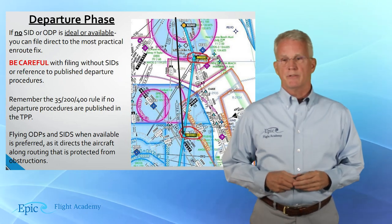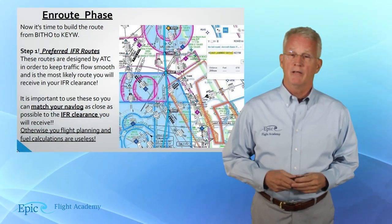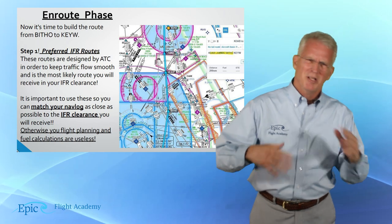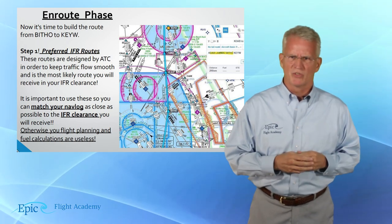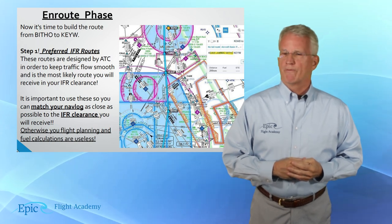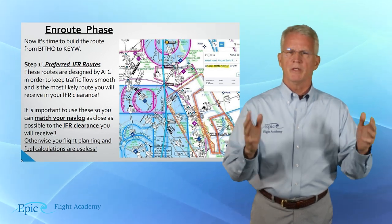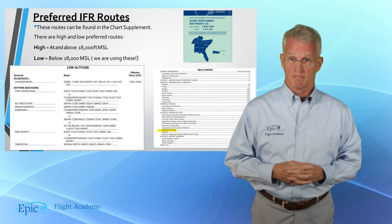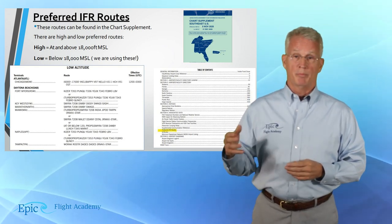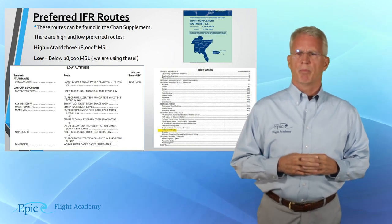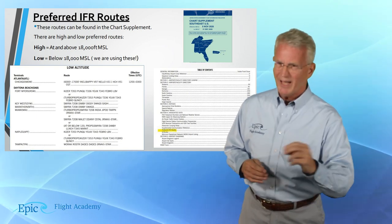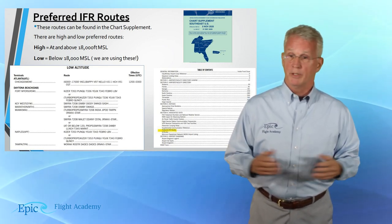In planning your en route phase, check the chart supplement to see if there are preferred routes between your departure and destination. Preferred routes are something like highways in the sky — you may enter and exit the route at any point. Preferred routes do not go between all airports. For example, on our Daytona to Key West flight, if we had departed from New Smyrna Beach Airport or the Ormond Beach Airport, departing just a few miles from Daytona, the chart supplement preferred routes does not list routes from New Smyrna or Ormond Beach to Key West.